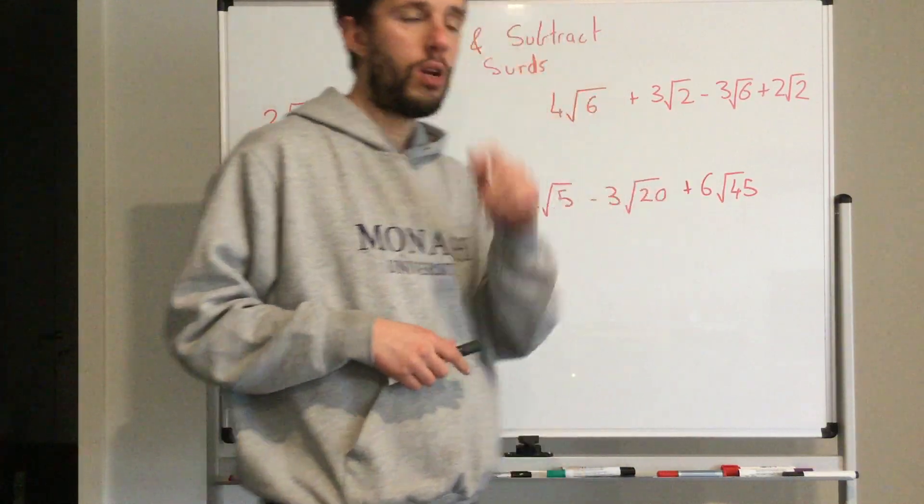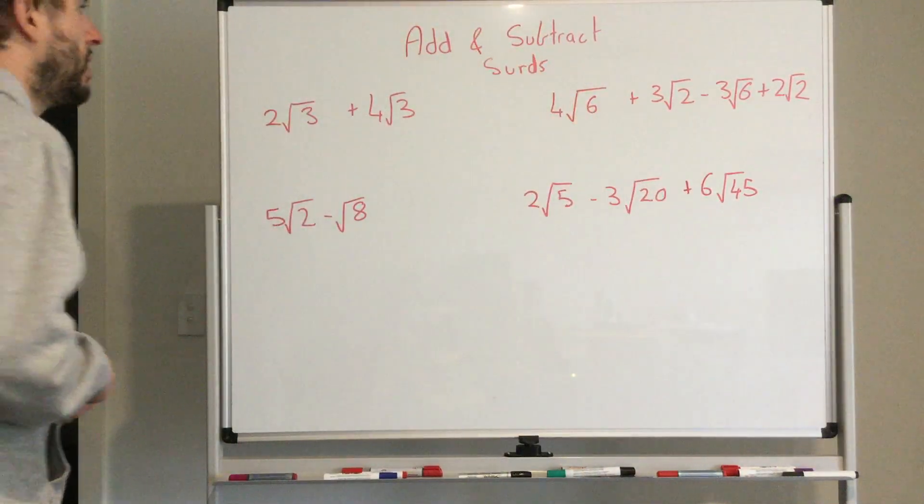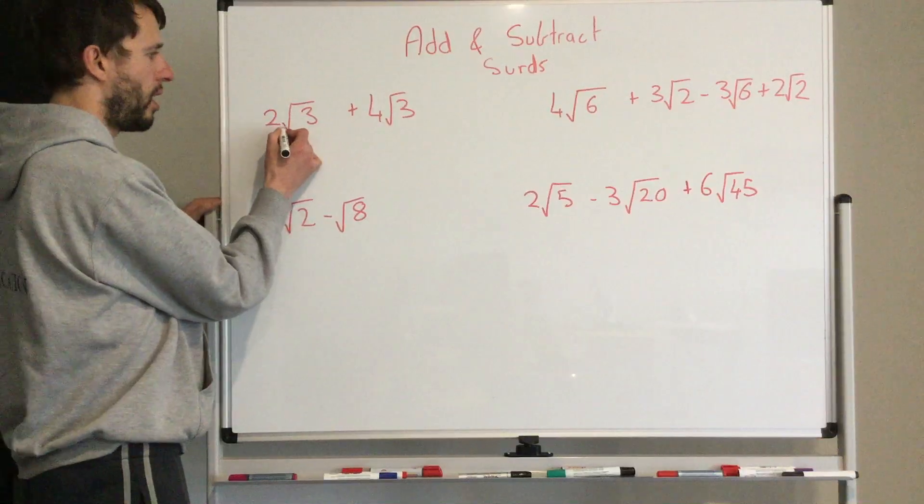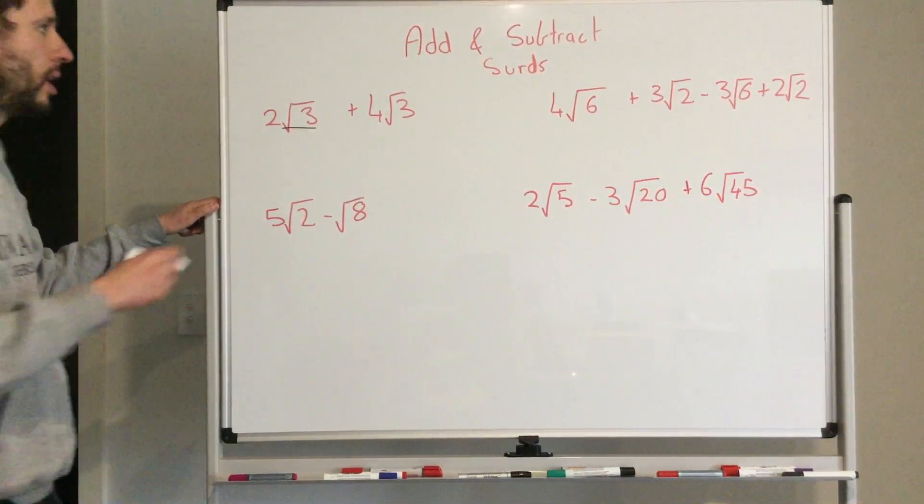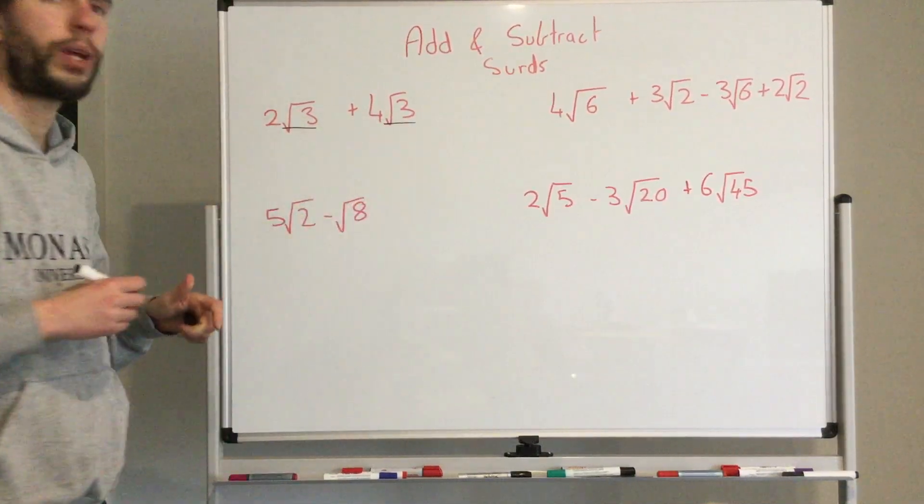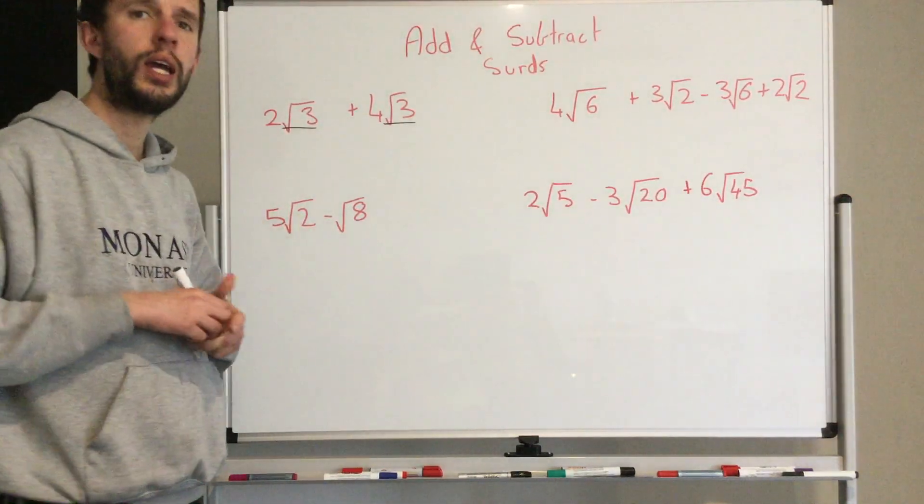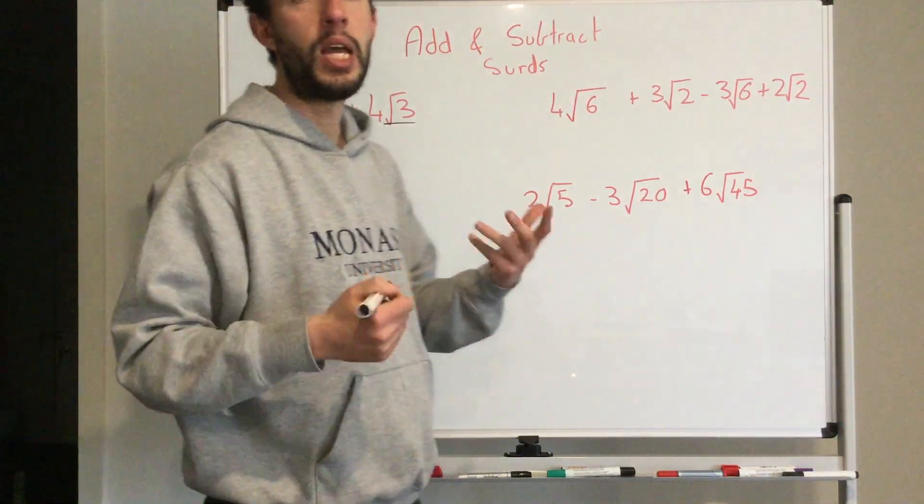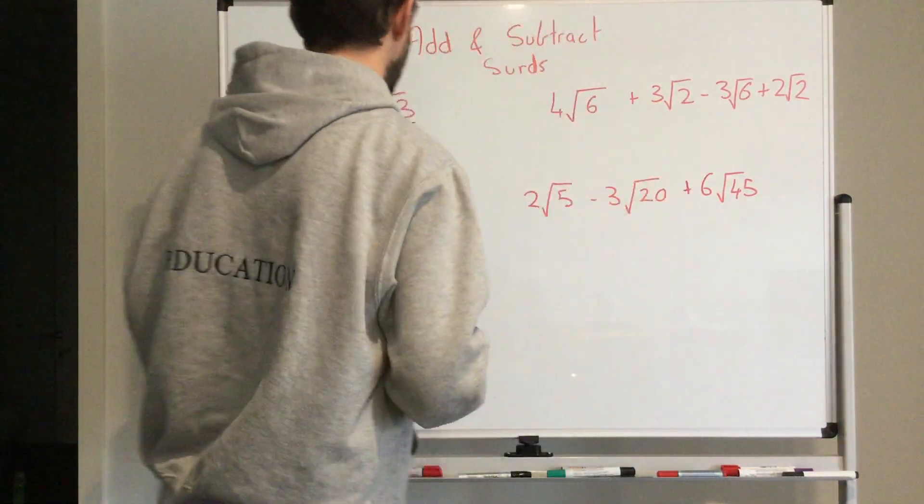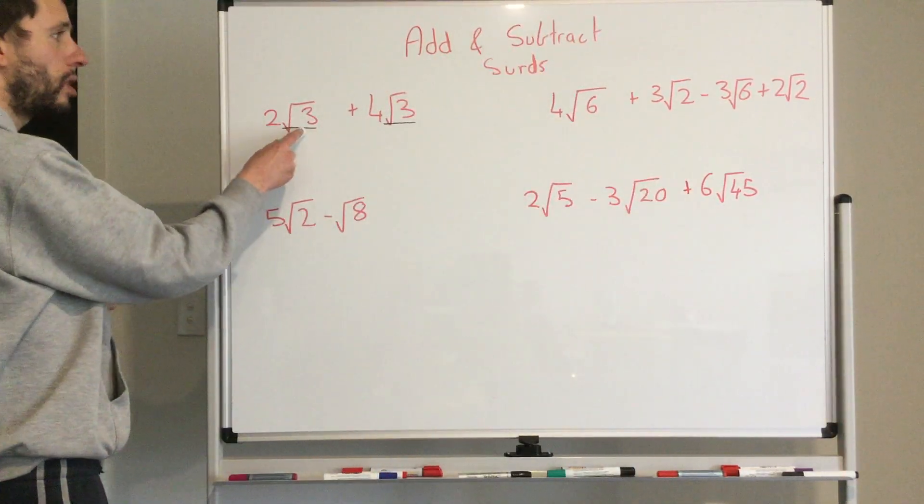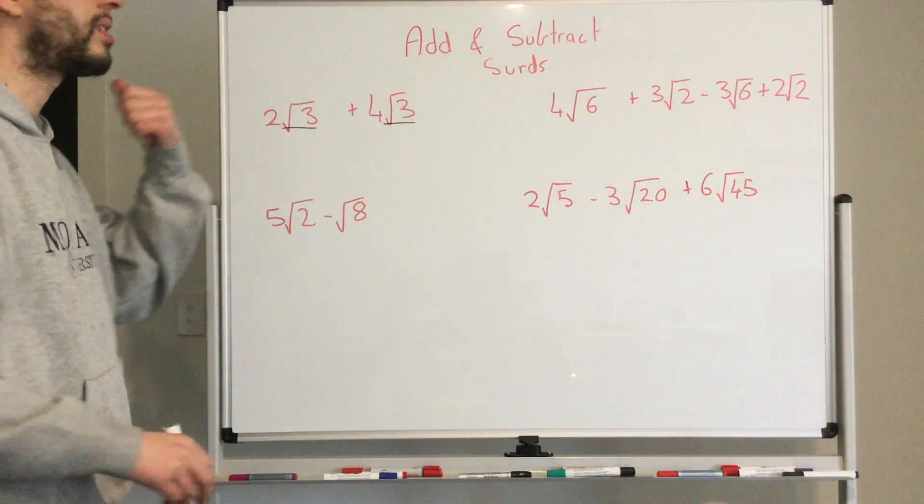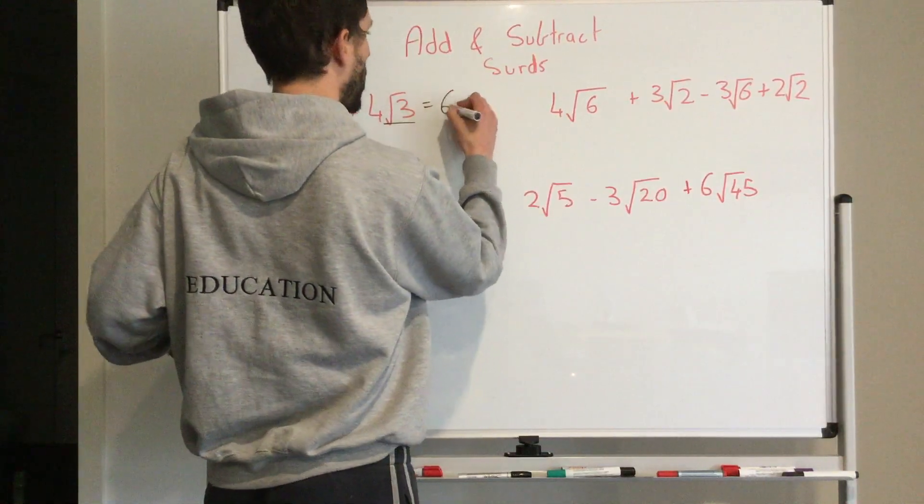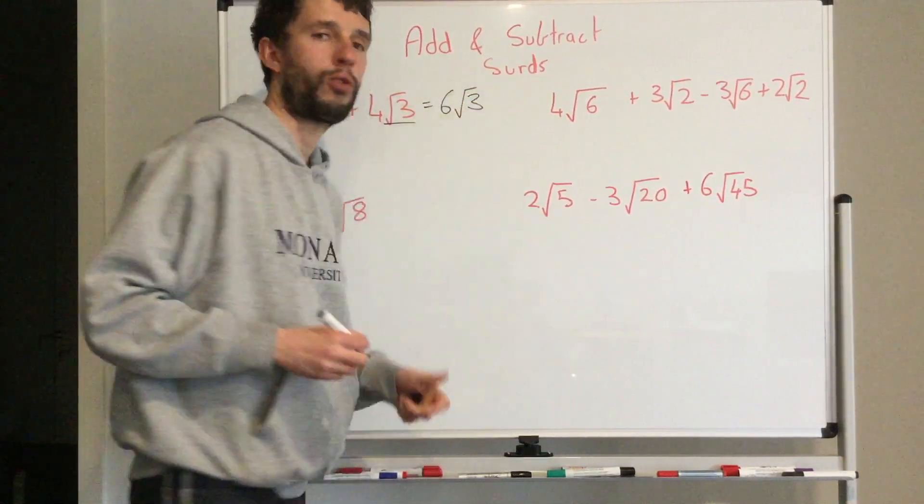When we're not, it makes it a bit trickier. So we start off: 2 times square root of 3 plus 4 times the square root of 3. Our variable, which is the square root of 3, is the same. So I can add them together. I can go well I've got 2 lots of this and I've got 4 lots of this. How many do I have in total? I've got 6 lots. So I've got 6 lots of square root of 3.